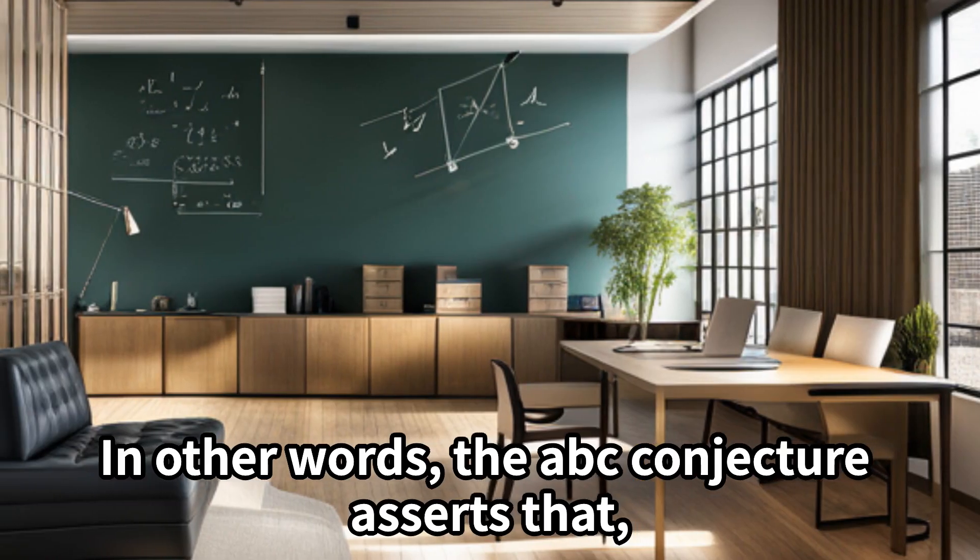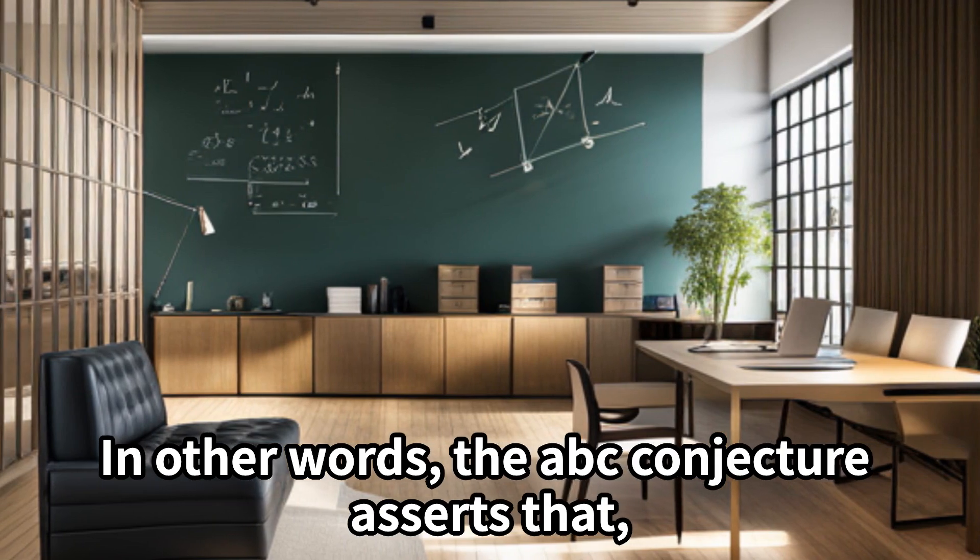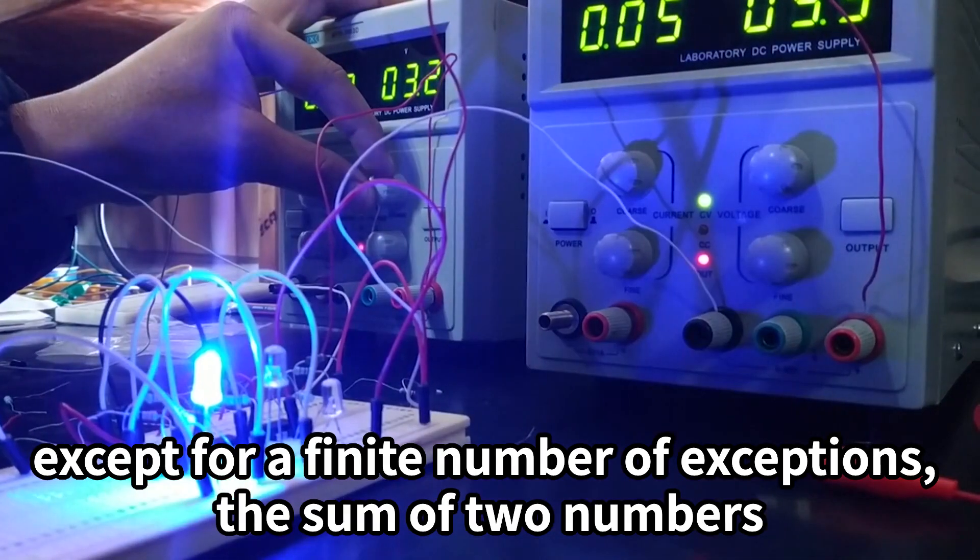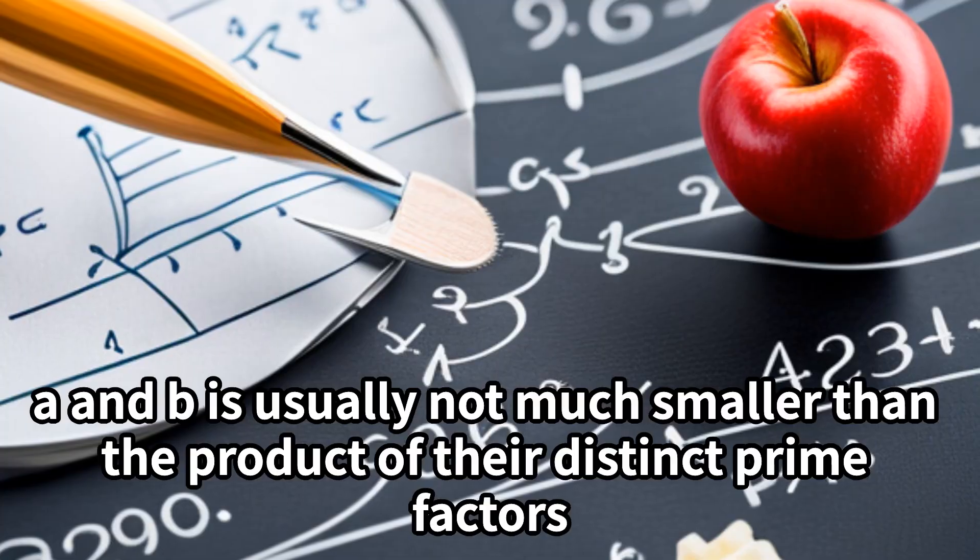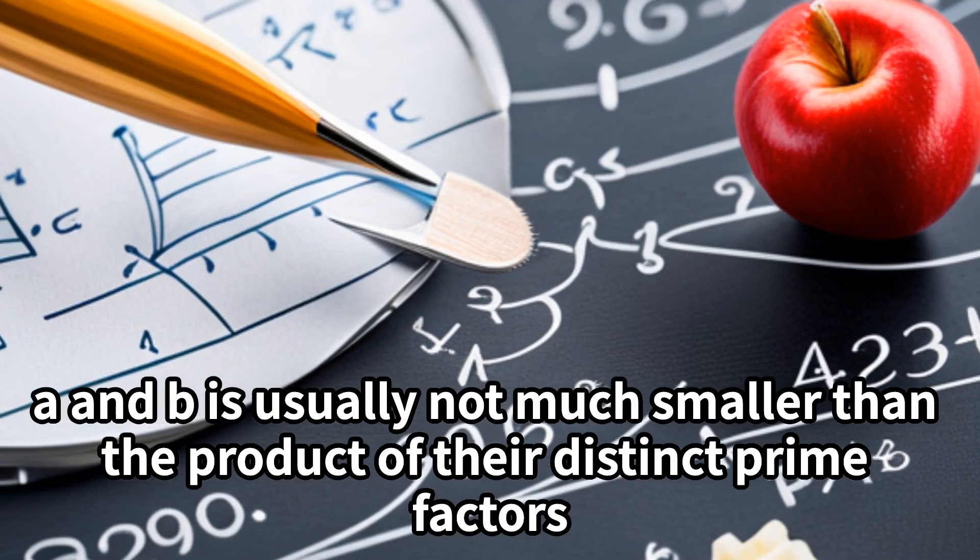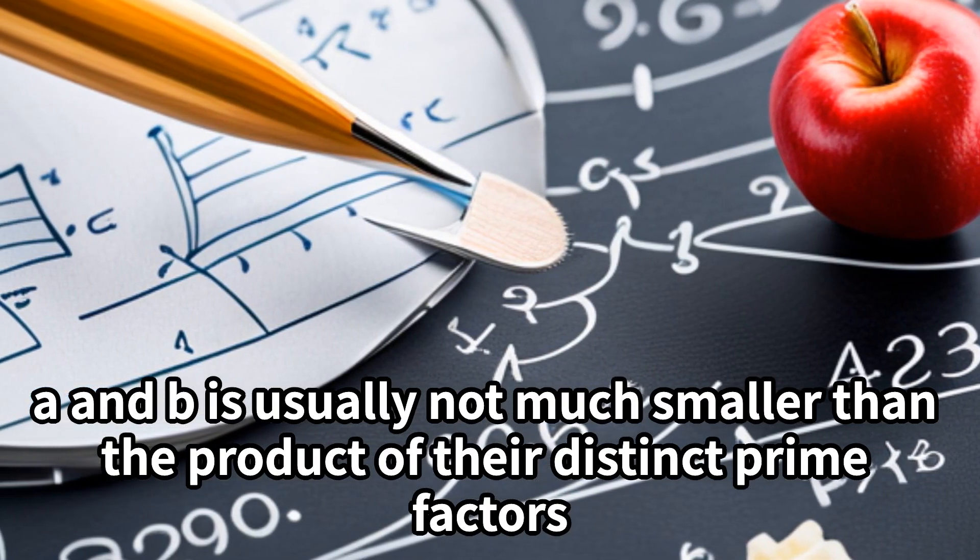In other words, the ABC conjecture asserts that, except for a finite number of exceptions, the sum of two numbers A and B is usually not much smaller than the product of their distinct prime factors.